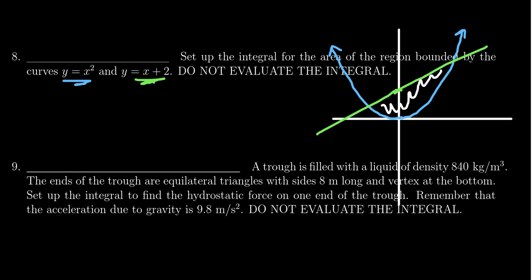Of interest to us is going to be these intersection points, which we see here and here. So let's look for those real quick. So if we set x squared equal to x plus 2.